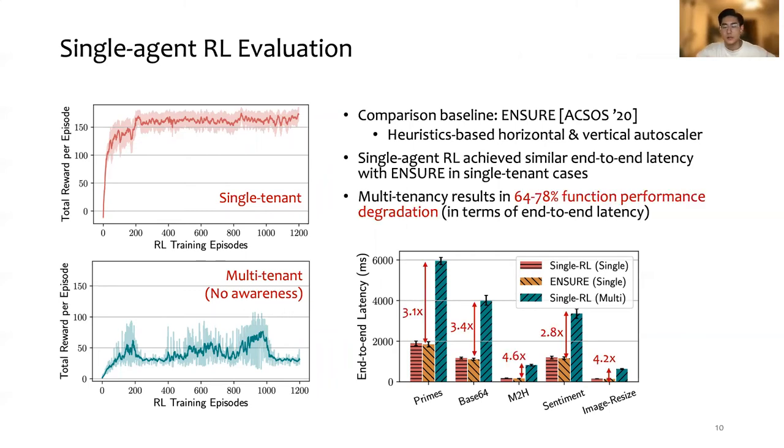In terms of the performance degradation introduced by multi-tenancy, we found that single-agent RL has 2.8 times to 4.6 times degradation in terms of function end-to-end latency.